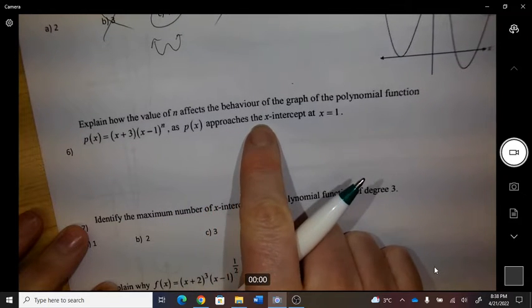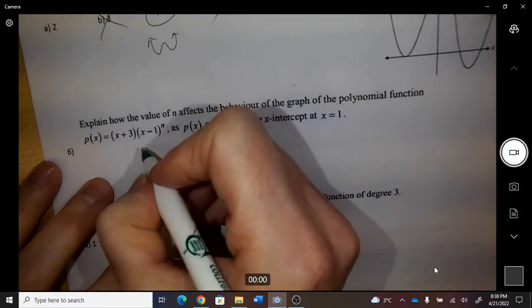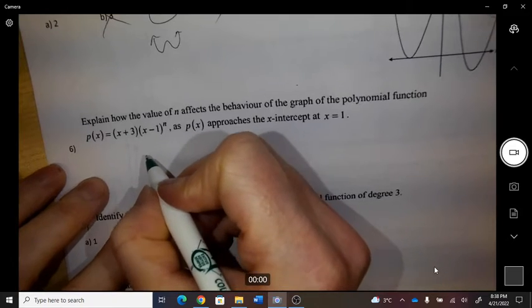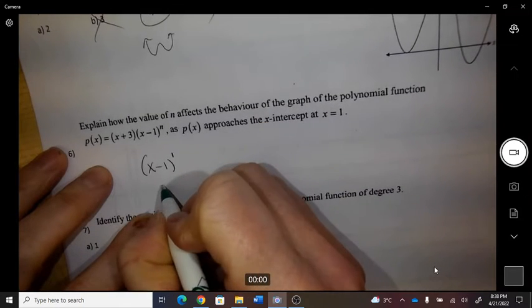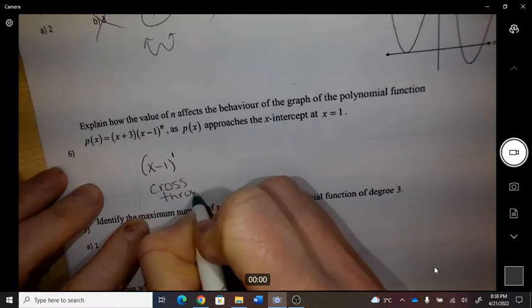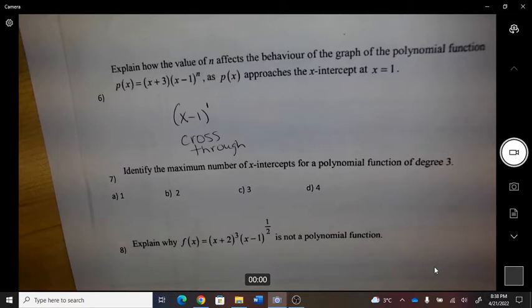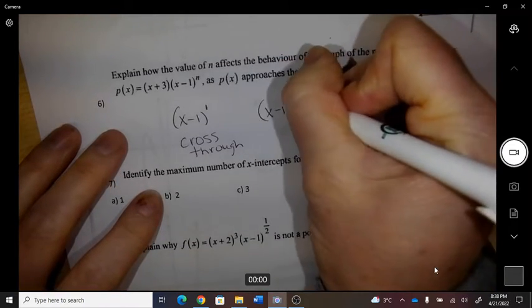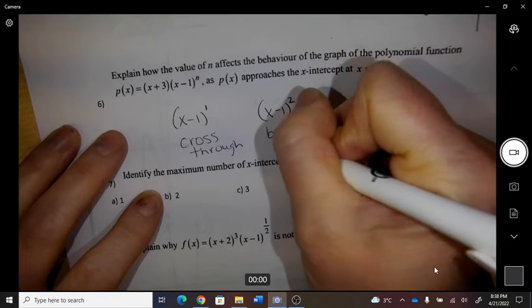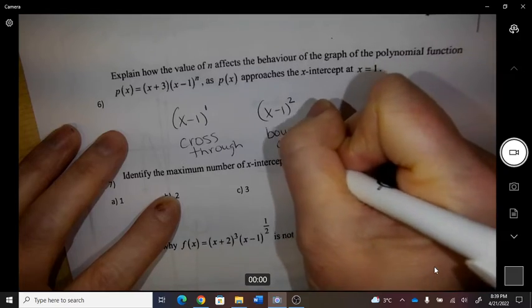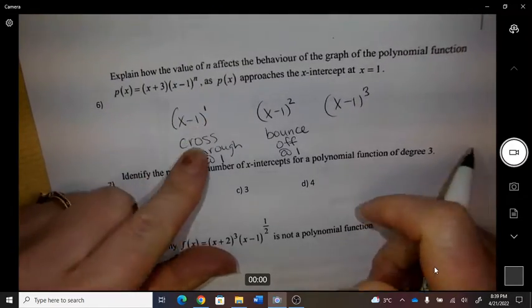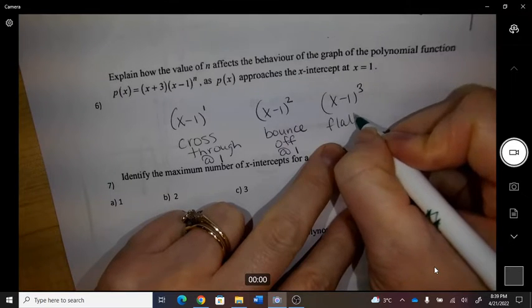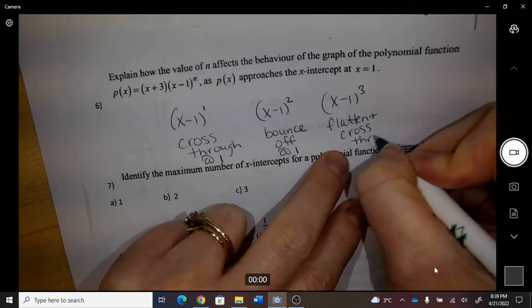as p(x) approaches the x-intercept at 1. So if n is 1, then it will cross through. And if it's (x-1) squared, it would bounce off at 1. And then if I was to have (x-1)³, if n was 3, it would flatten and cross through at 1.